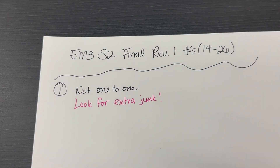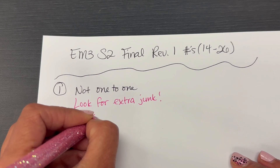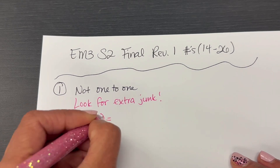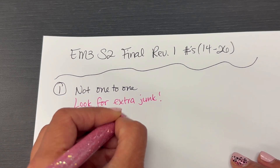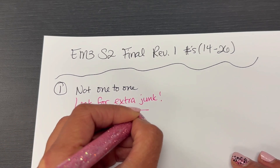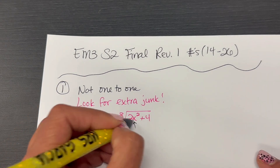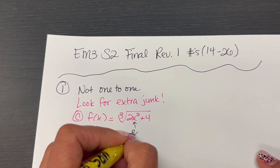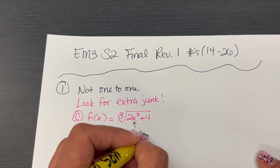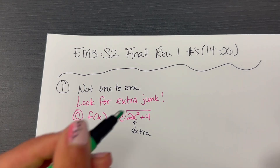So the extra junk is letter C, because we've got F of X equals the cubed root of 2X squared plus 4. That X squared is the extra junk. And that is number 1.